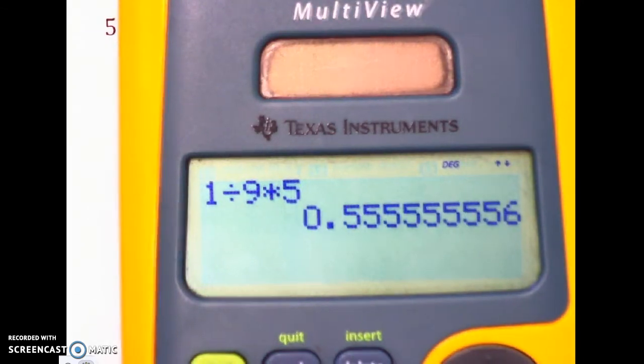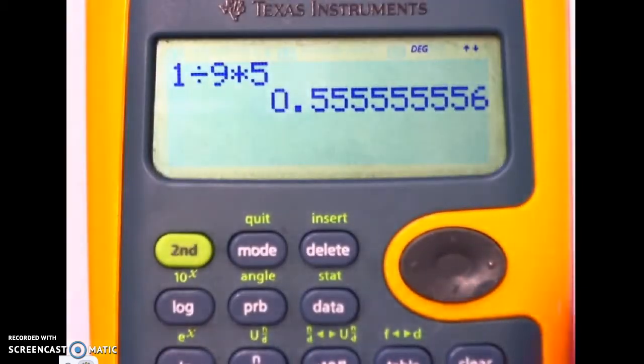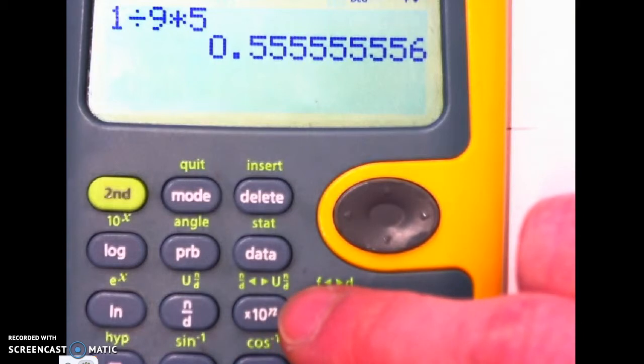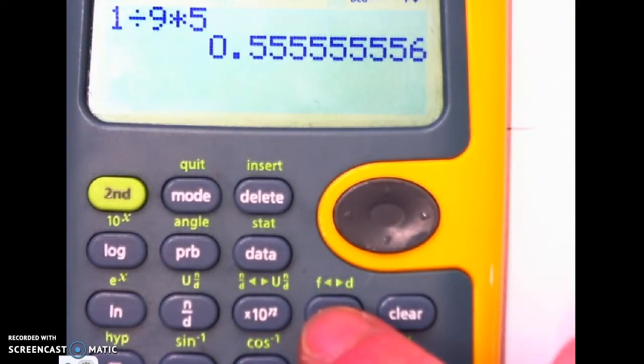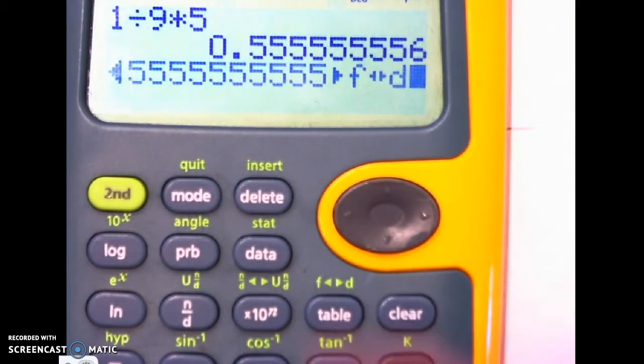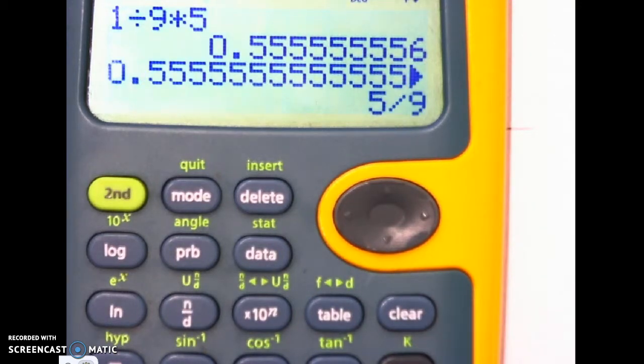If you get a decimal like that and you don't know what it is, you can do this button right here. You can press 2nd and there's a button that's right here. It says f to d. It takes a decimal and makes it into a fraction for you. So I can press that and press enter. So the answer is 5 over 9.